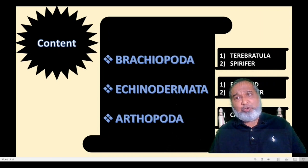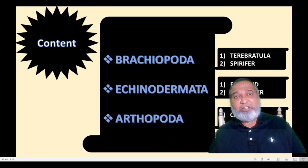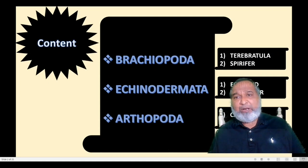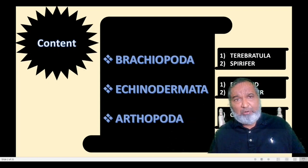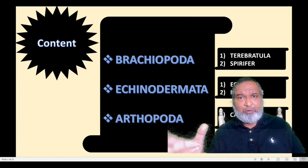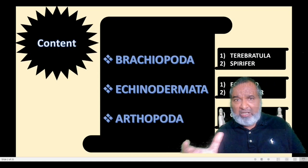From Brachiopoda we are going to study two specimens: one is Terebratula, which is a completely petrified fossil, and the second is Spirifer, which is a cast specimen with some parts broken. From Echinodermata we have Echinus and Micraster. From Phylum Arthropoda we are going to see Calymene and Paradoxides — these two are cast specimens, while Echinus is original and Micraster is a fossil.